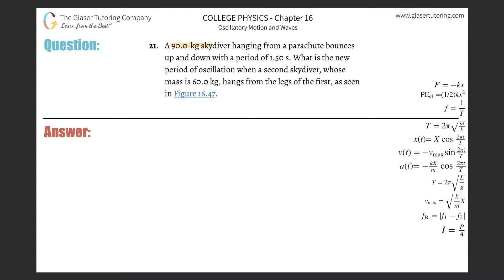Number 21. A 90-kilogram skydiver hanging from a parachute bounces up and down with a period of 1.5 seconds. What is the new period of oscillation when a second skydiver whose mass is 60 kilograms hangs from the legs of the first? The mass is 90 kilograms, and this bouncing up and down sounds like simple harmonic motion with a period of 1.5 seconds.